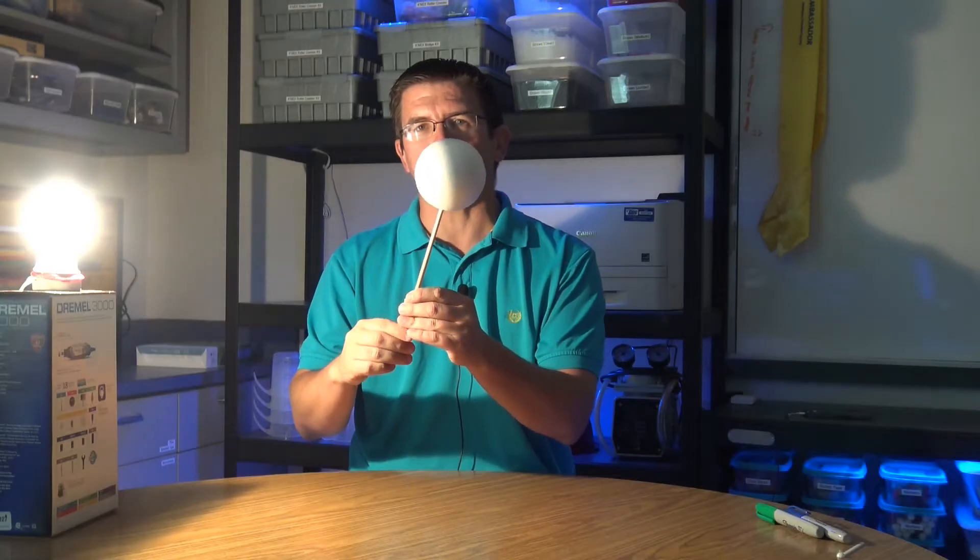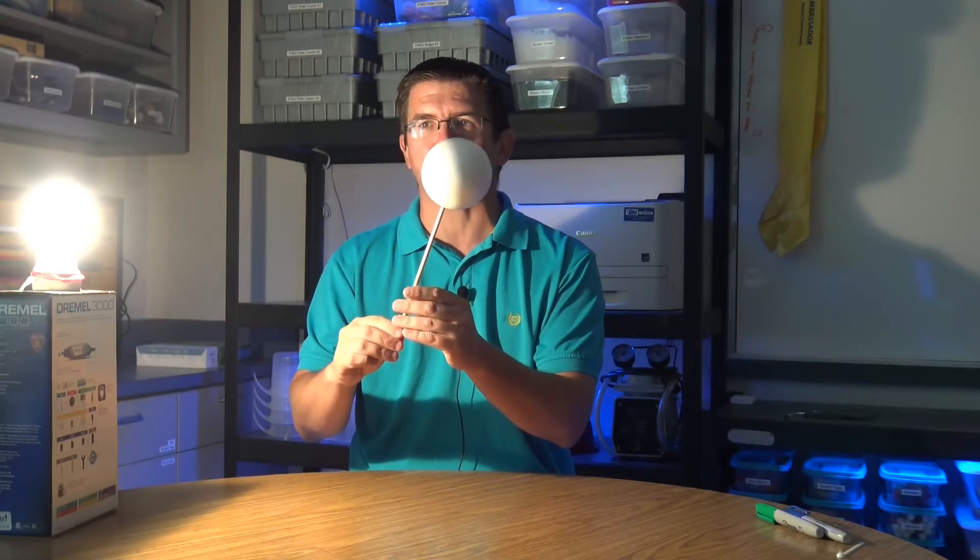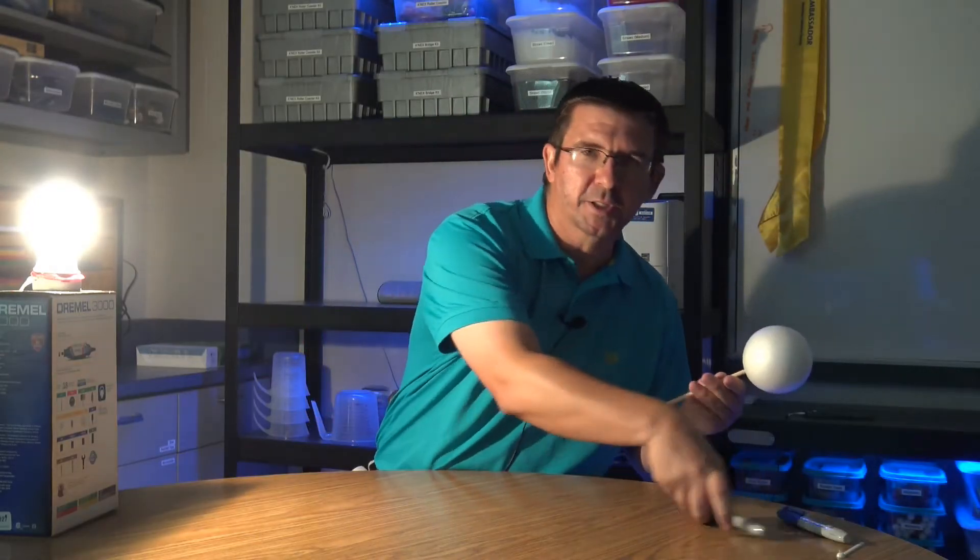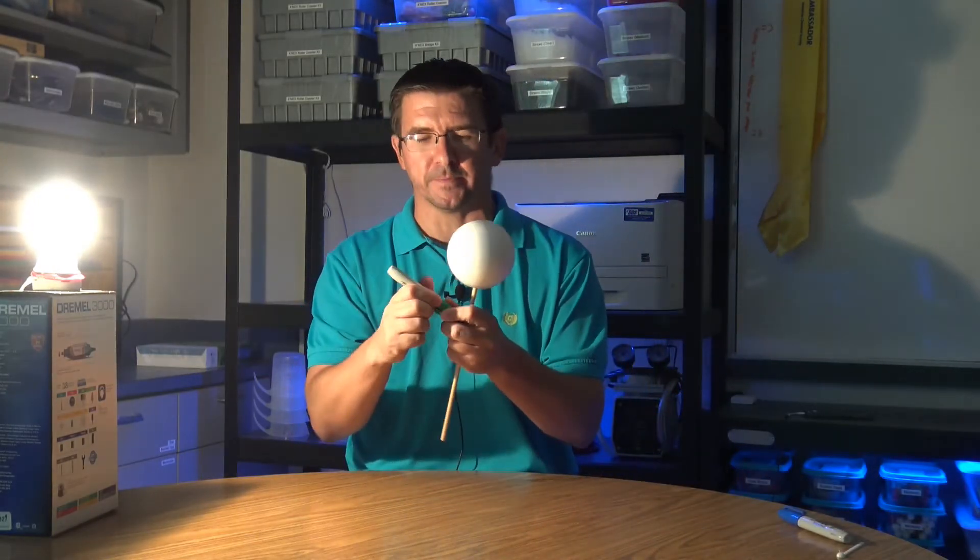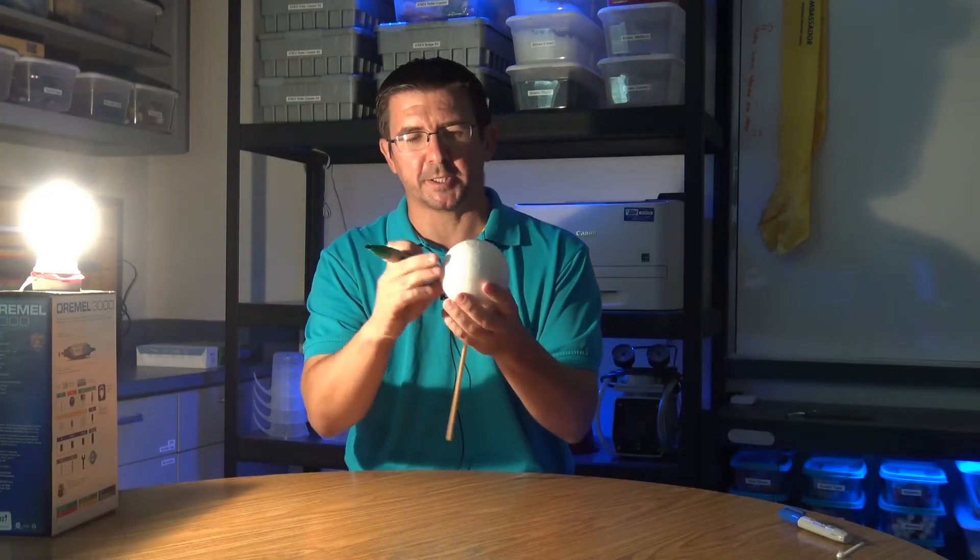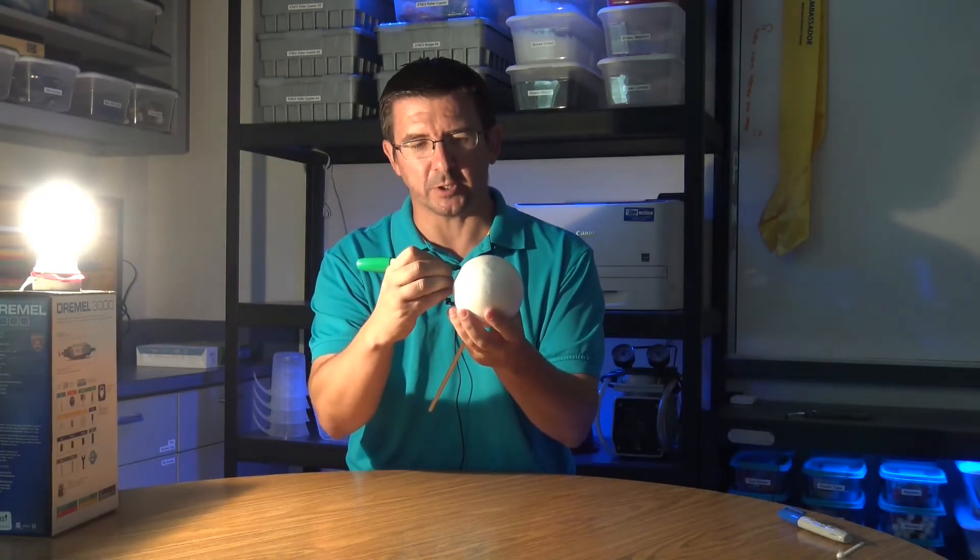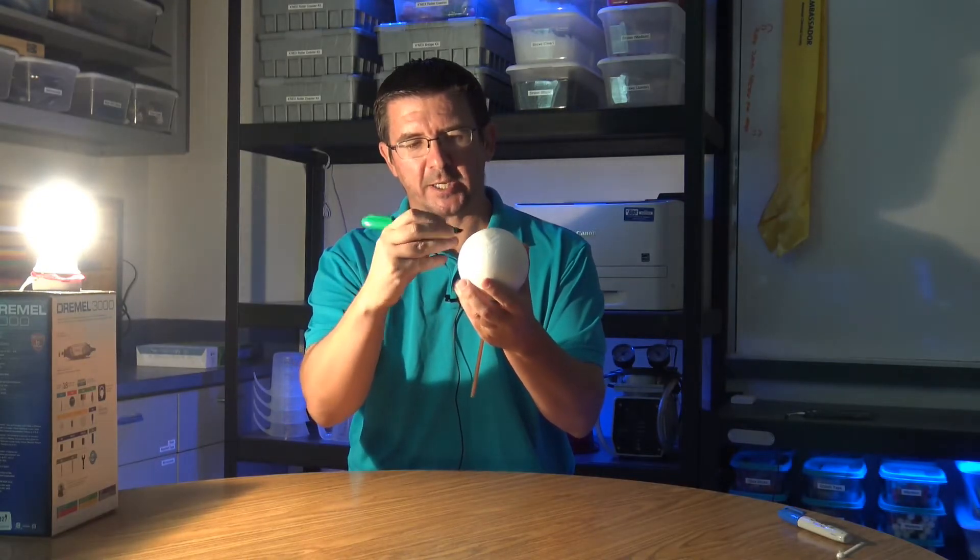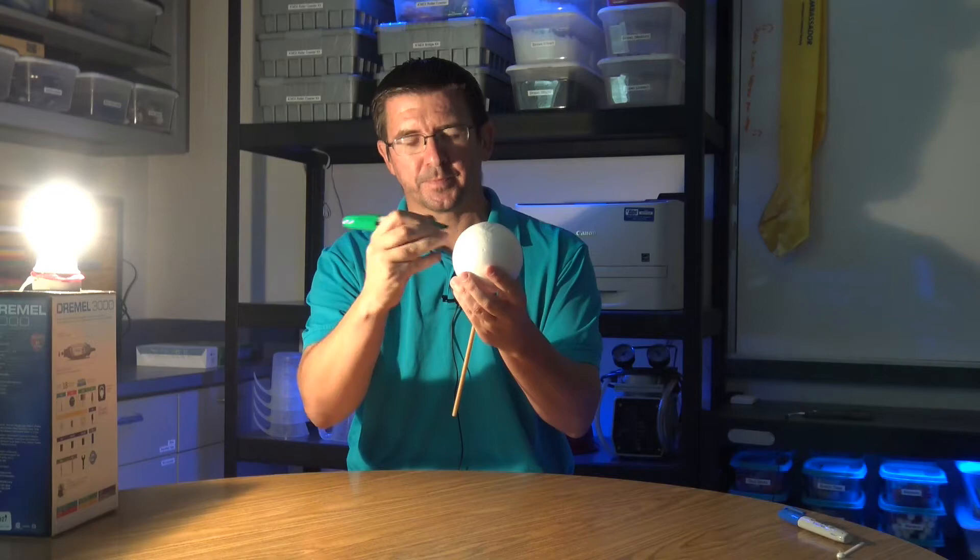So as I turn the dowel rod, you can see that the Earth, the styrofoam ball, is rotating. And just to make it a little bit easier so that we can keep track of position, I'm just going to take my marker here, and I'm just going to put an X on the styrofoam ball. And this X is going to represent our location on Earth.